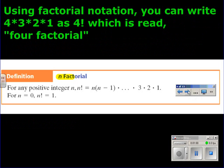Using factorial notation, you can write 4 times 3 times 2 times 1 as 4 exclamation point, which is read 4 factorial. For any positive integer n, n factorial equals n times n minus 1 times 3 times 2 times 1.